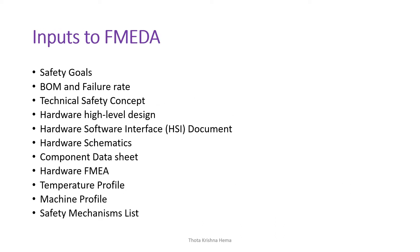The inputs to FMEDA are: safety goals, bill of material and failure rate, technical safety concept (TSC), hardware high-level design or hardware architecture design, HSI document (that is hardware-software interface document), hardware schematics, component data sheet, temperature profile, machine profile, and safety mechanisms list. All of these need to be available as inputs to initiate FMEDA.